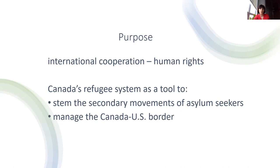When I refer to secondary migratory or asylum movements, I mean asylum seekers who move onwards from the first country of asylum to another. It's been a huge issue of debate over the past decades. I'm interested in understanding how Canada's refugee system has been instrumentalized — used as a tool — to stem the secondary movements of asylum seekers coming through the US-Canada border, and also to manage the Canada-US border.